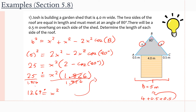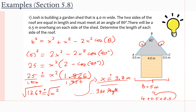Taking the square root of both sides gives x = √13.69 ≈ 3.7 meters to one decimal place. Therefore, the length of each side of the roof is about 3.7 meters.